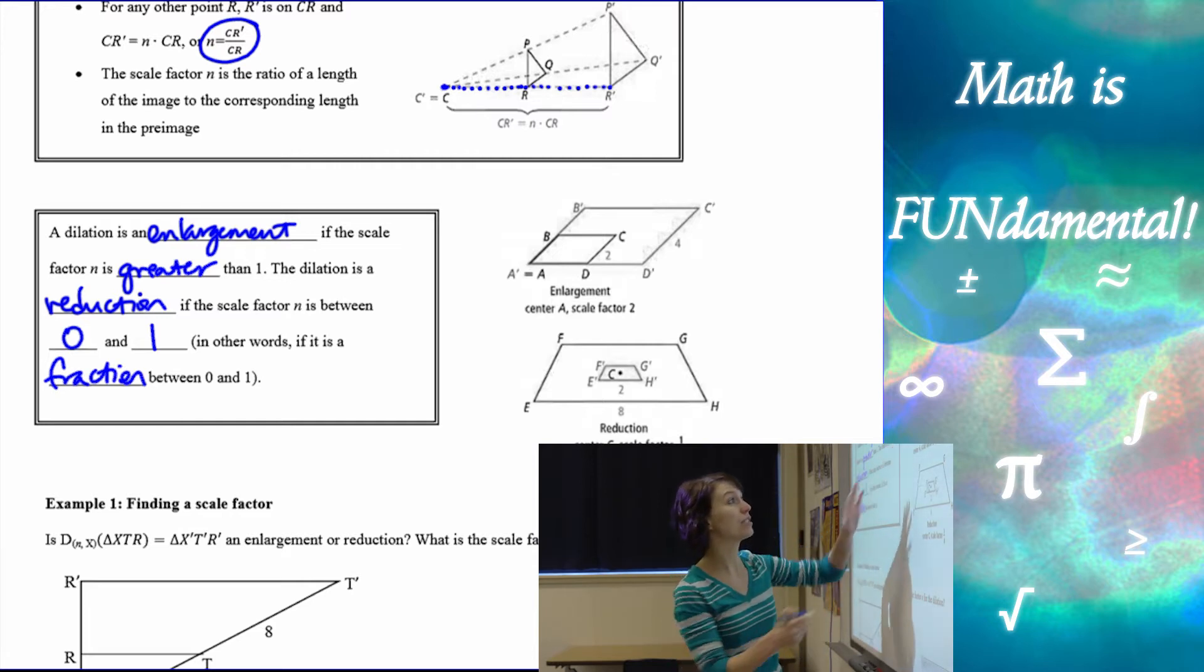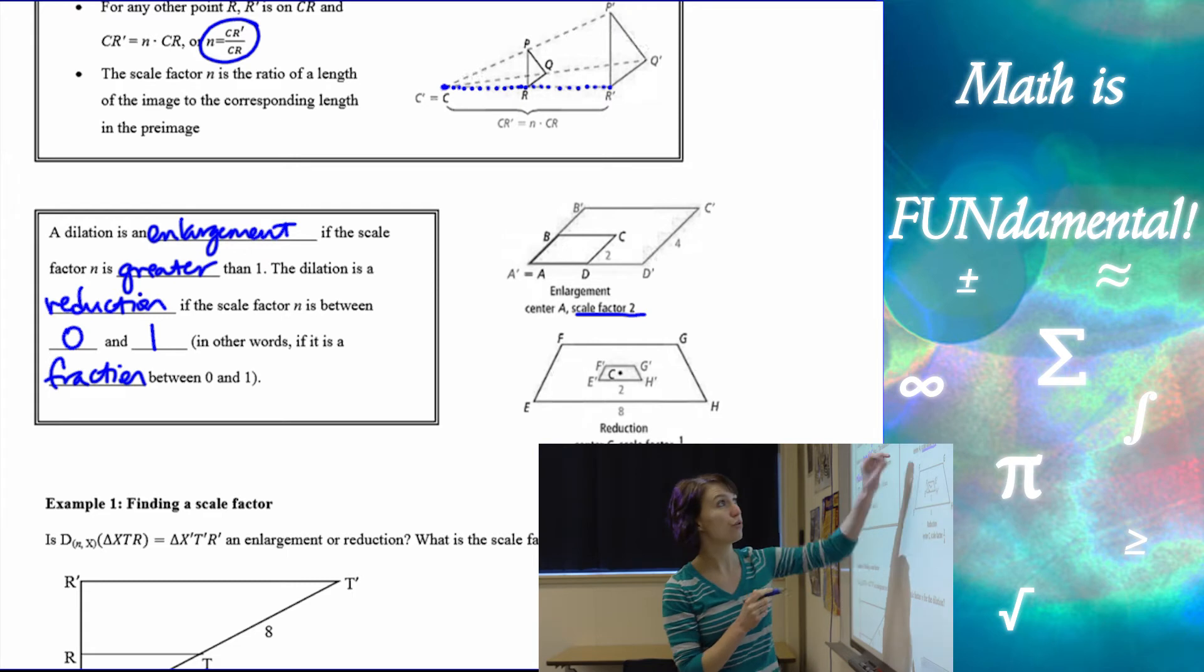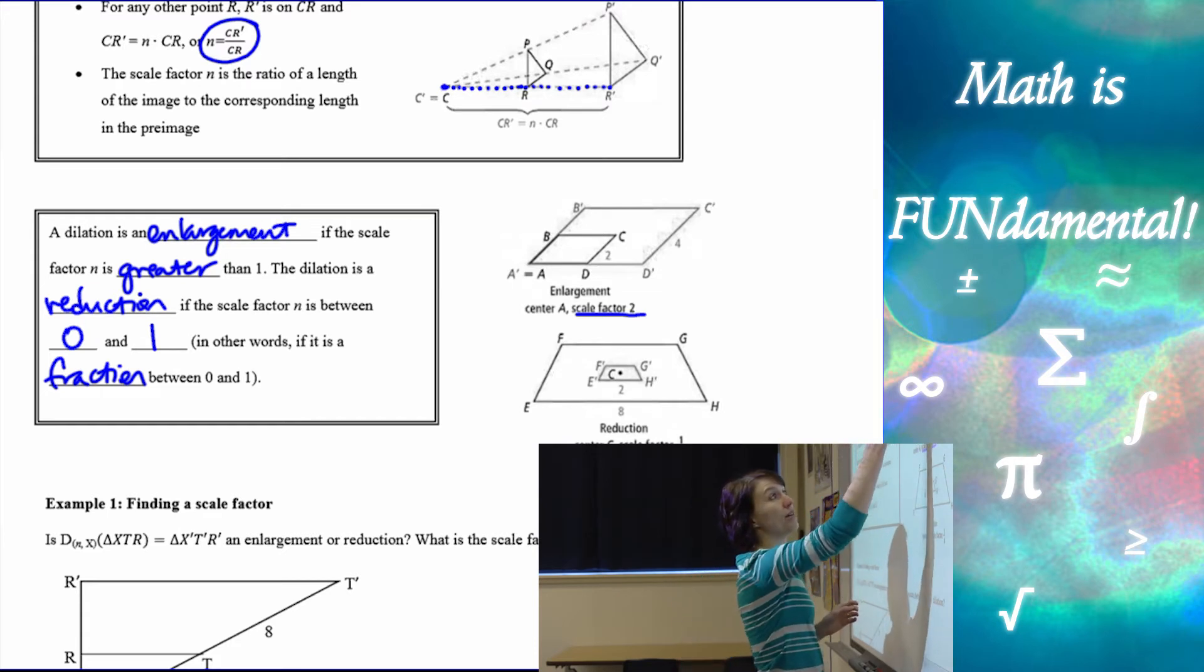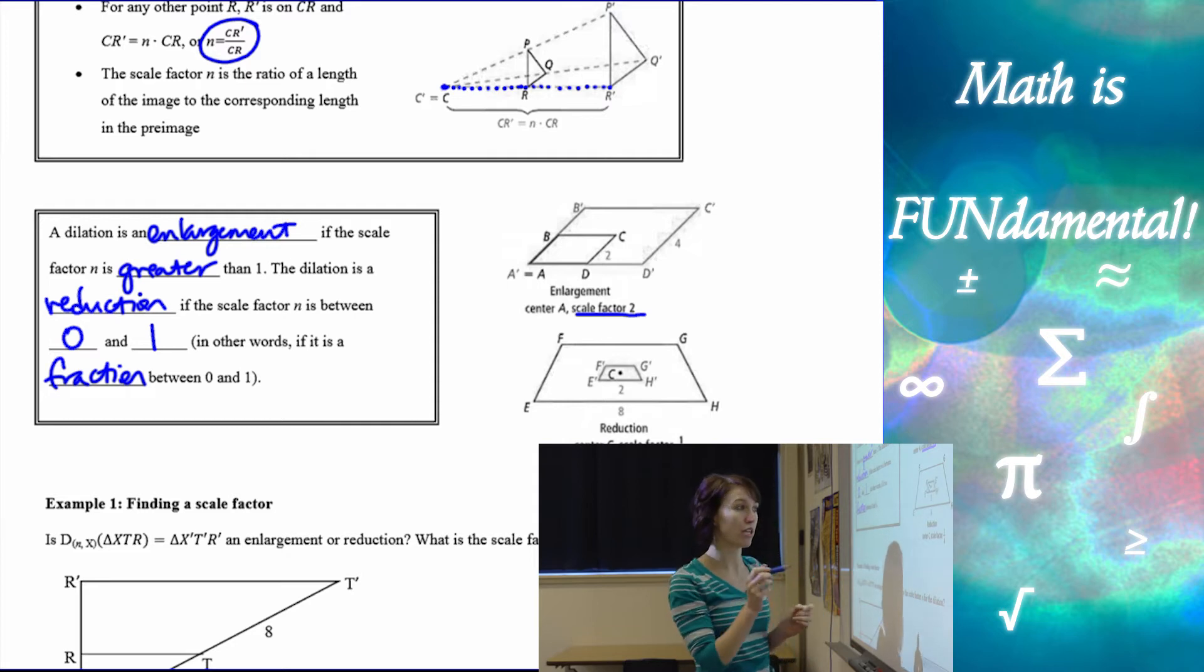So here are a couple examples. Scale factor 2, so it got larger. If we look at our original points and our image points from our pre-image to our image, our image points always have those little prime notations.